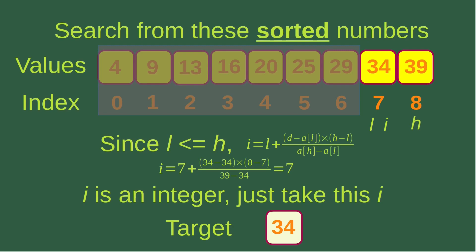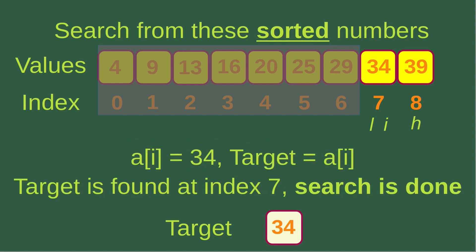Now since l = 7 is still smaller than or equal to h = 8, I find the new probable index i, which equals 7 — already an integer, so I take it as is. We see that i = 7, l = 7, and h = 8. And a[i] = a[7] = 34. That means the target element equals a[i], so we say the target is found at index 7, represented by i. The search is done.